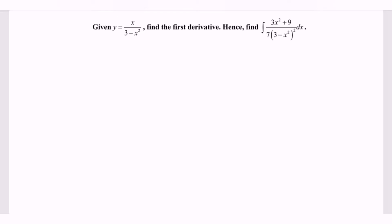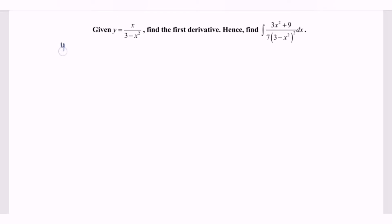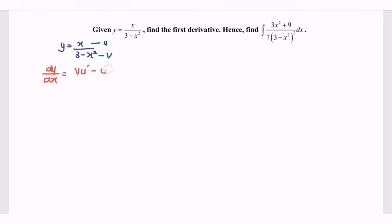Part one: find the derivative of y = x / (3 - x²). We let u = x and v = (3 - x²), then apply the quotient rule: dy/dx = (v·u' - u·v') / v².